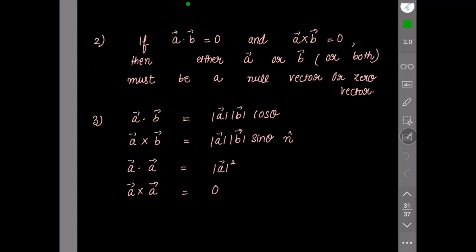Second remark: if the dot product of two vectors is zero and the cross product of the same vectors is also zero, then either a or b or both must be a null vector or zero vector, which is represented by zero.